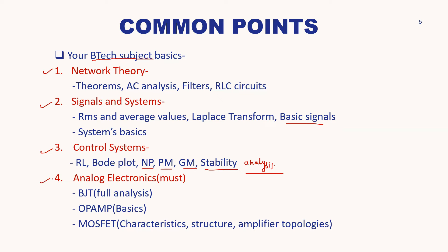Analog Electronics is the most important subject, and I have written it as a must. Because in the electrical department, the specializations like Instrumentation and Integrated Electronics (IIE) are focusing much toward analog electronics, as the professors are currently doing in their curriculum work. So analog is going to play a vital role here. Please be very clear with the concepts of BJT, op-amp, and MOSFET. For op-amp, prepare the basics; BJT should be fully analyzed.